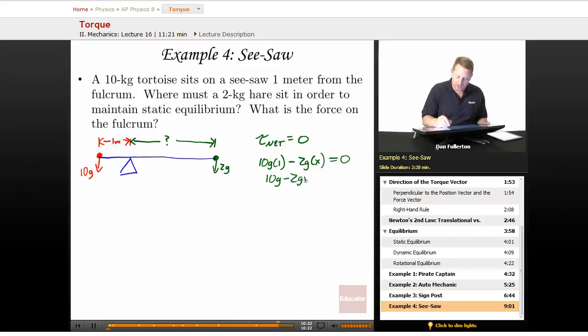So 10 g minus 2 g x equals zero, 10 g equals 2 g x, or x equals 10 g over 2 g, which must be five meters. The hair must sit five meters from the fulcrum.